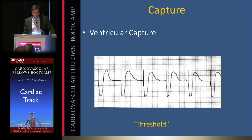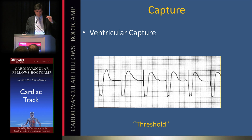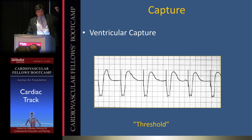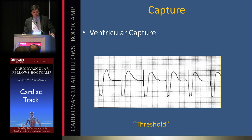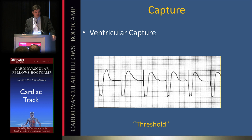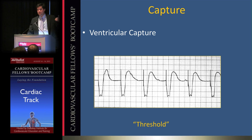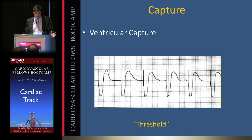Knowing the threshold allows you to set a safety margin above it so no beat is missed. During acute implants there is greater variability, so a larger safety margin is used. In chronic settings the threshold tends to be stable, so the margin is reduced to save energy and extend battery life.